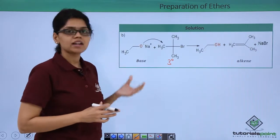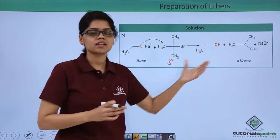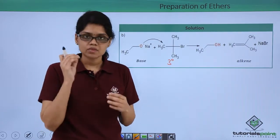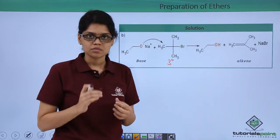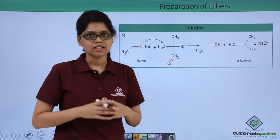Therefore, the same alkoxide ion now acts as a base and abstracts a hydrogen atom resulting in the formation of an alkene. This problem again stresses the importance of using primary alkyl halide as a substrate and secondary or tertiary alkoxide ion as the attacking species.